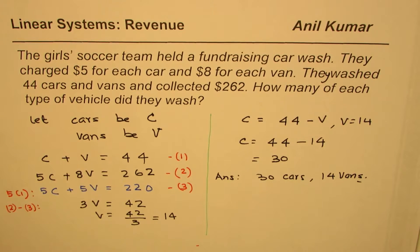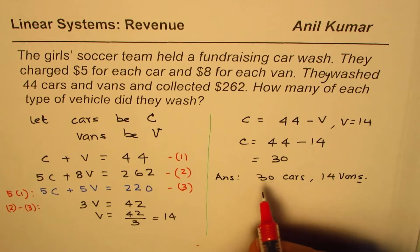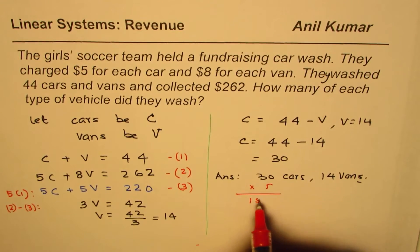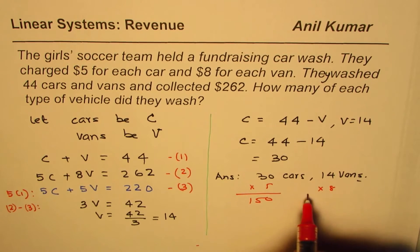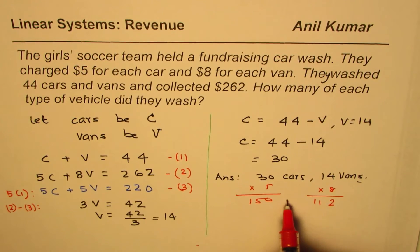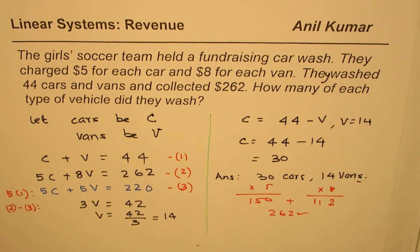It's a good idea to check your solution. Multiply 30 cars by $5 to get $150. Multiply 14 vans by $8 to get $112. When you add them up, you get $262, which verifies that your solution is correct.